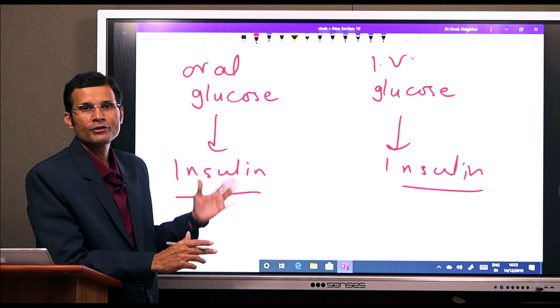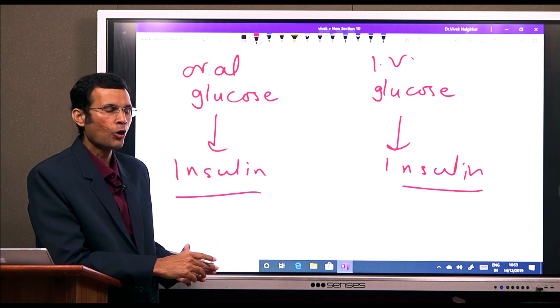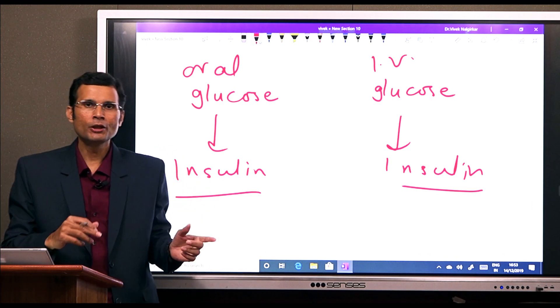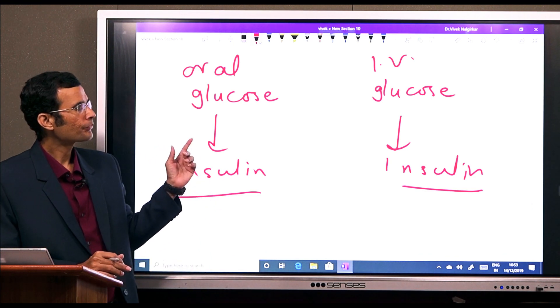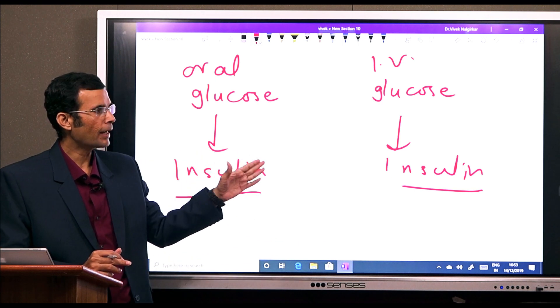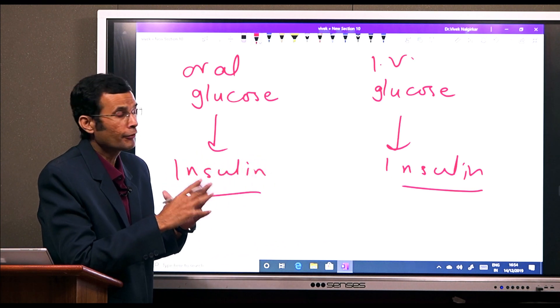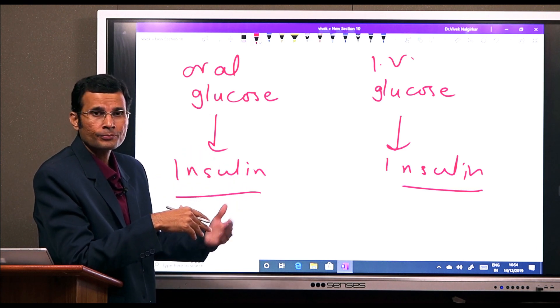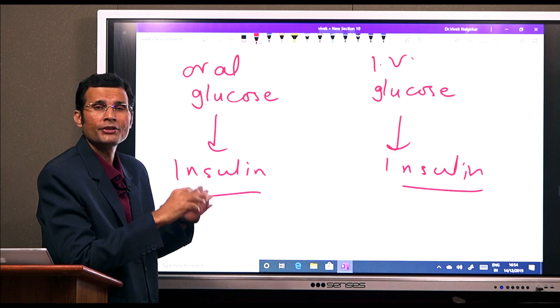Because of this incremental effect or incretin effect. So IV glucose, intravenous glucose, will enter the pancreas or the pancreatic beta cells and cause release of insulin directly.